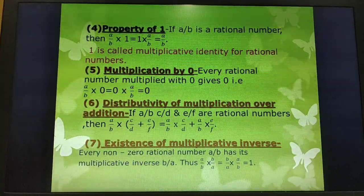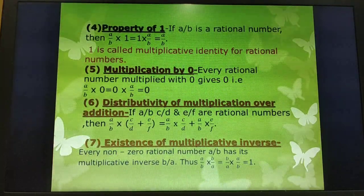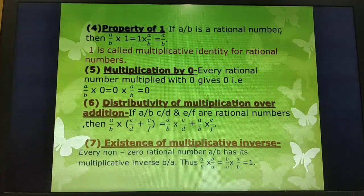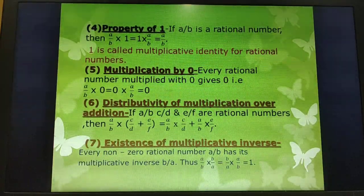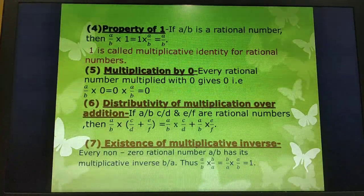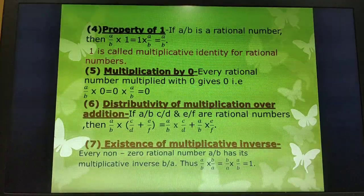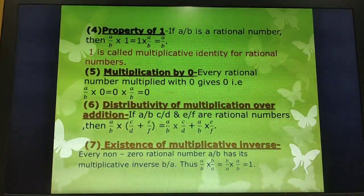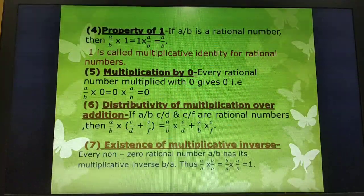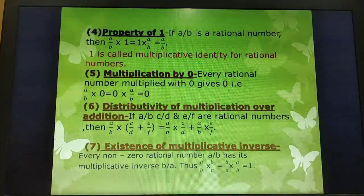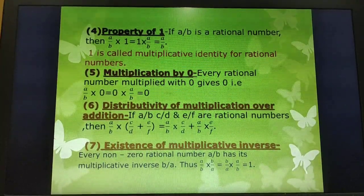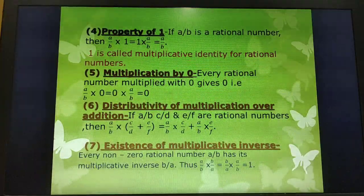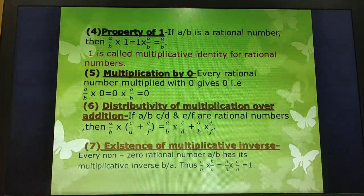Fifth is multiplication by 0: every rational number multiplied by 0 gives 0. That is, A/B × 0 = 0 × A/B = 0. For example, 2 × 0 = 0. Sixth is distributivity of multiplication over addition: if A/B, C/D and E/F are rational numbers, then A/B × (C/D + E/F) = A/B × C/D + A/B × E/F. On the right-hand side, we open the bracket and then simplify.